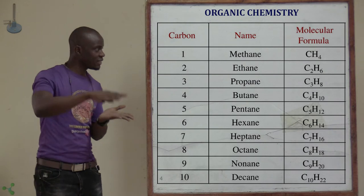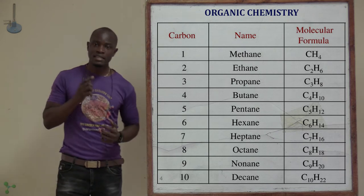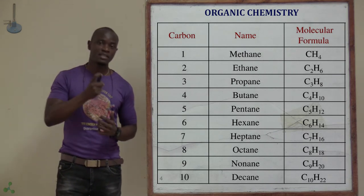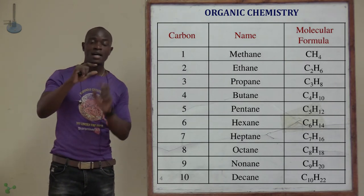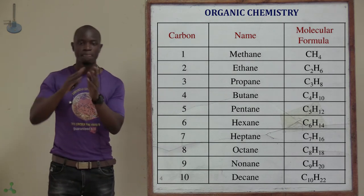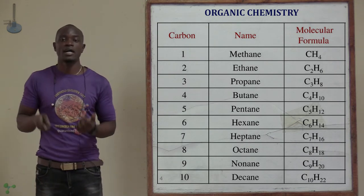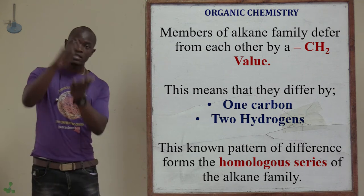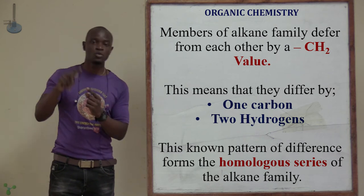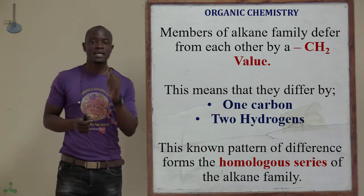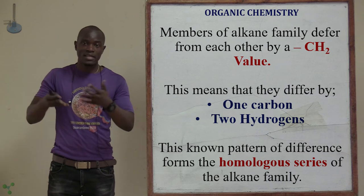Comparing ethane and propane: ethane is C2H6 and propane is C3H8. The difference is that ethane has two carbon atoms and six hydrogen atoms, while propane has three carbon atoms and eight hydrogen atoms. So all these members differ from one another by one carbon and two hydrogens — that is a CH2 unit.